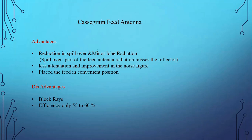Now, what are the disadvantages of this antenna? The first disadvantage is blockage of rays. Because here we use two reflectors — one is the main reflector and the other is the sub-reflector — the signal path between the sub-reflector and the main reflector is confined within the two reflecting plates, causing blockage.